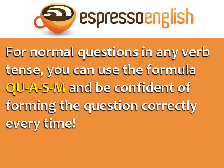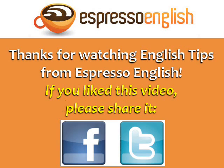For normal questions in any verb tense, you can use the formula: question word, auxiliary verb, subject, main verb — and be confident of forming the question correctly every time. Thanks for watching English tips from Espresso English. If you liked this video, please share it.